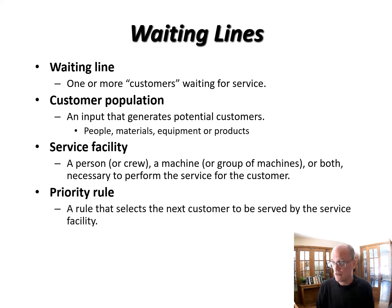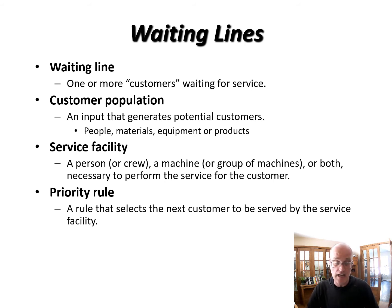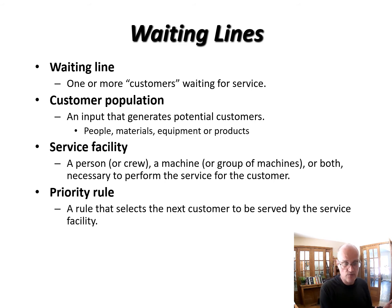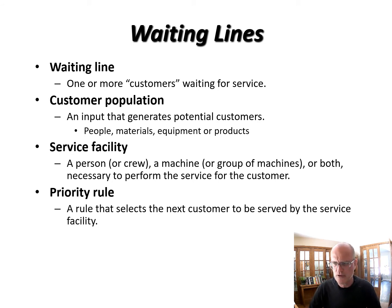The priority rule is how we decide who the next person in line to serve might be. The obvious one is the next person in line — first in, first out. But sometimes, like in an emergency room, they will triage you and look at urgency. In some cases, a customer who isn't going to take very long to serve gets prioritized over one who will take a long time.